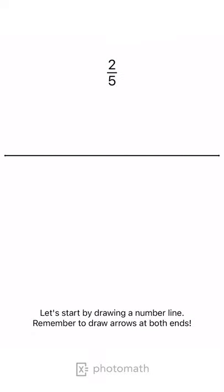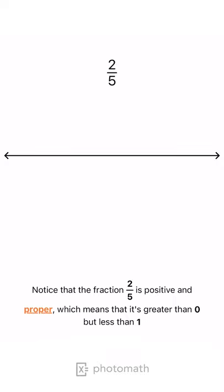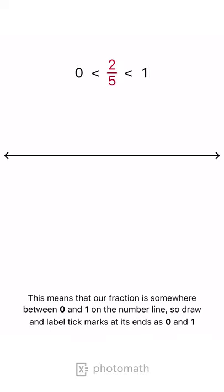Let's start by drawing a number line. Remember to draw arrows at both ends. Notice that the fraction two-fifths is positive and proper, which means that it's greater than zero but less than one. This means that our fraction is somewhere between zero and one on the number line, so draw and label tick marks at its ends as zero and one.